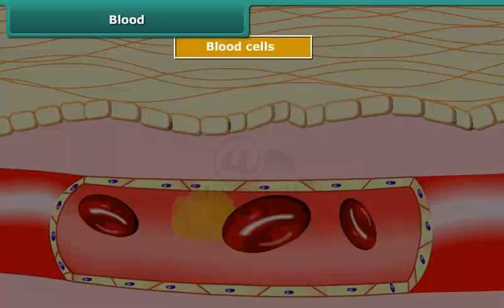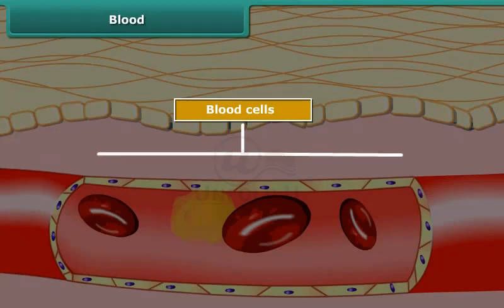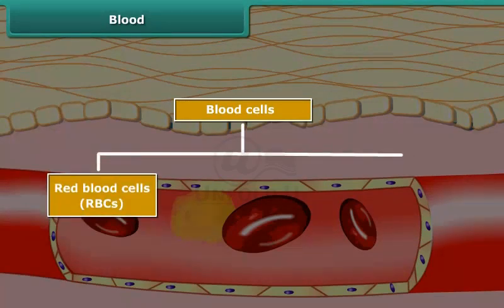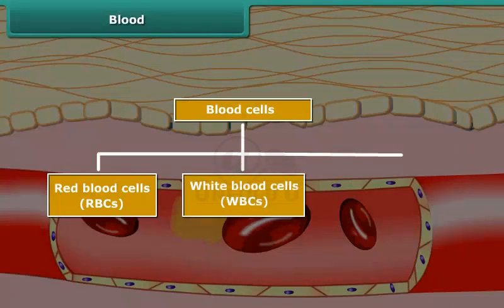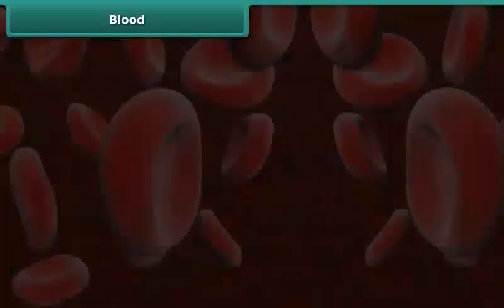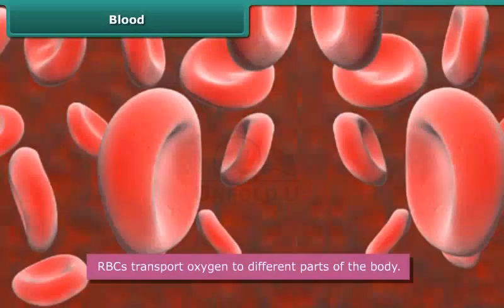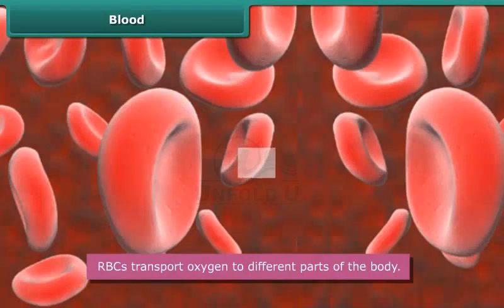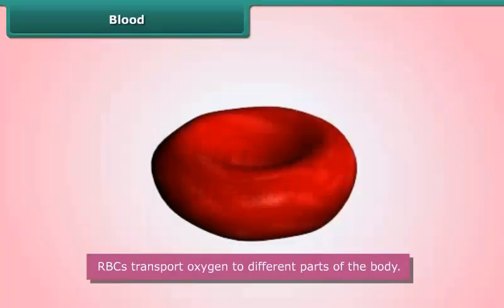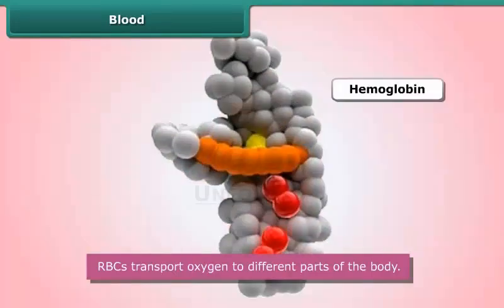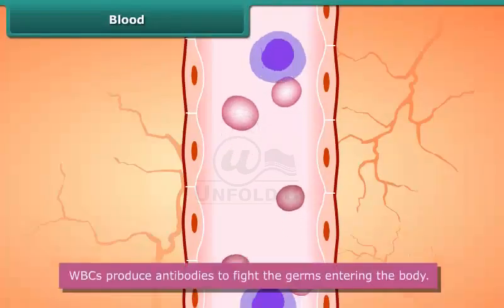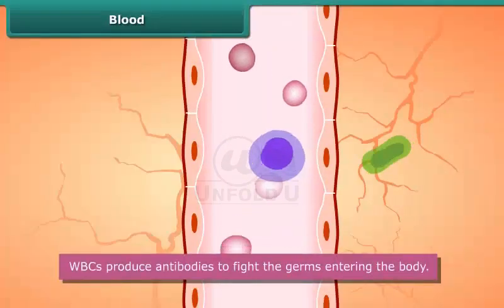There are three types of blood cells: red blood cells (RBCs), white blood cells (WBCs), and platelets. RBCs are also known as erythrocytes. They are disc-shaped and contain a protein called hemoglobin, which is rich in iron and gives the blood its red color. Hemoglobin transports oxygen to different parts of the body.